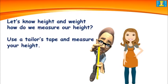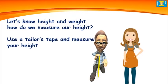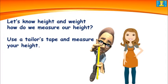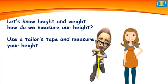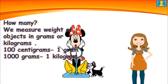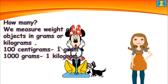Let's know height and weight. How do we measure our height? Use a tailor's tape and measure your height. We measure weight of objects in grams or kilograms. 100 centigrams is 1 gram. 1000 grams is 1 kilogram.